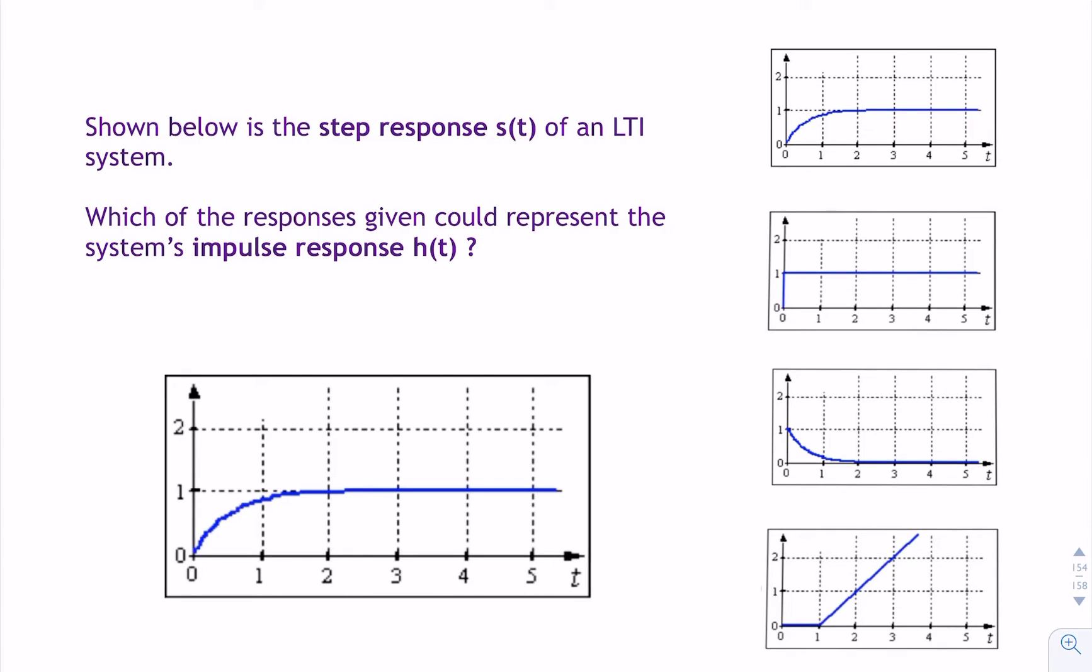In this example, we're given the step response s(t) of a system. So we know that if a unit step is applied at t equals 0 to the input of our system, the output will look something like this.